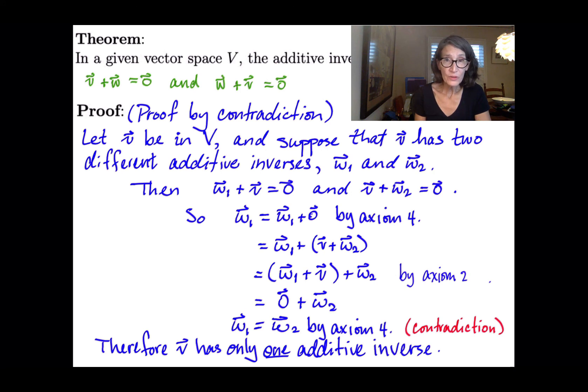Now, why does that prove it's true for every vector in our vector space, V? Well, because we chose an arbitrary vector, little v. It wasn't a specific vector. It was an arbitrary vector. So what we just proved was true for any vector in that vector space.